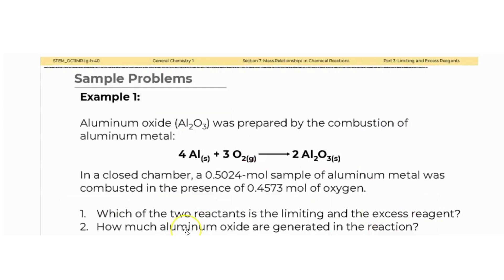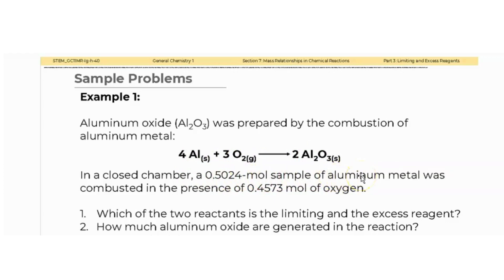Let's have an example. The problem involves the combustion of aluminum. The balanced equation is: 4 moles of aluminum plus 3 moles of oxygen producing 2 moles of aluminum oxide. We are given 0.524 moles of aluminum reacting in the presence of excess air, with 0.4573 moles of oxygen available.